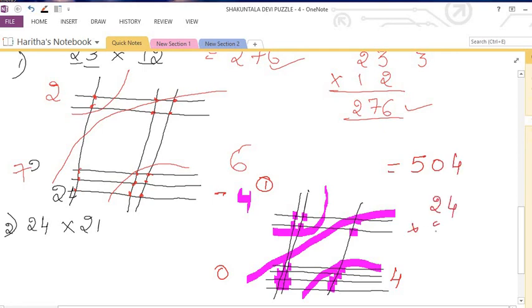Now let's check this. 1 times 4 is 4, 1 times 2 is 2. 2 times 4 is 8, 2 times 2 is 4. Now 4, 2 plus 8 is 10. So 5, 0, 4. Did I get the same answer? So this is the way we are going to do Japanese multiplication. I hope you all understand this.